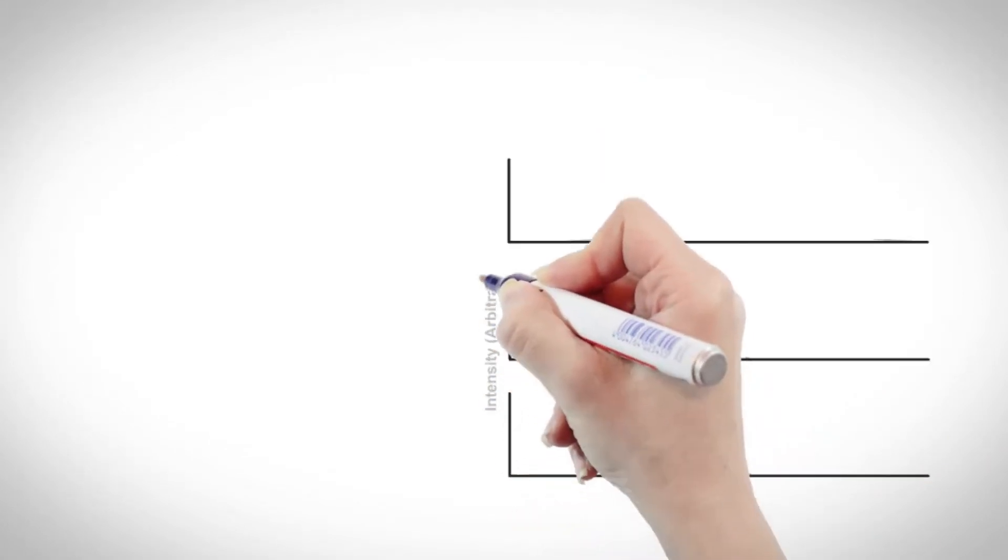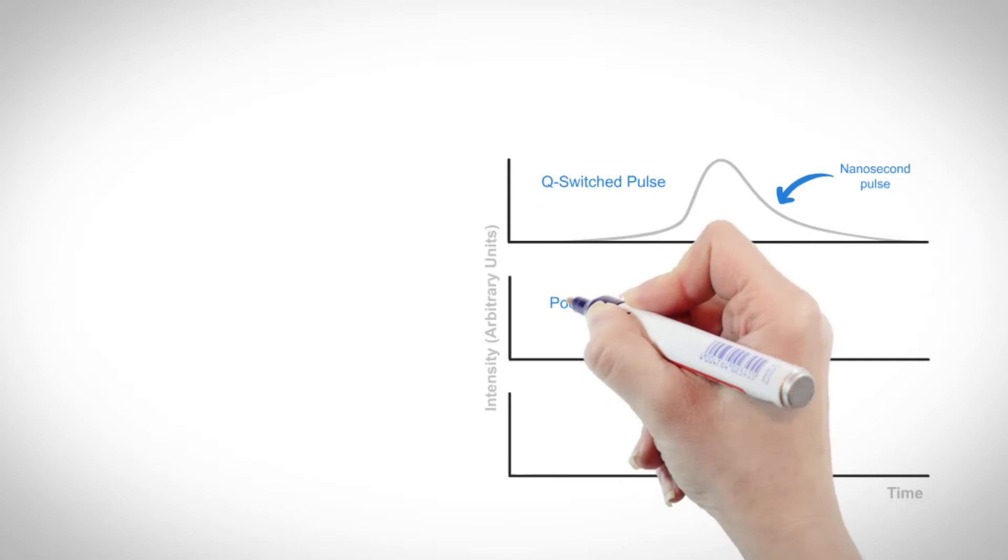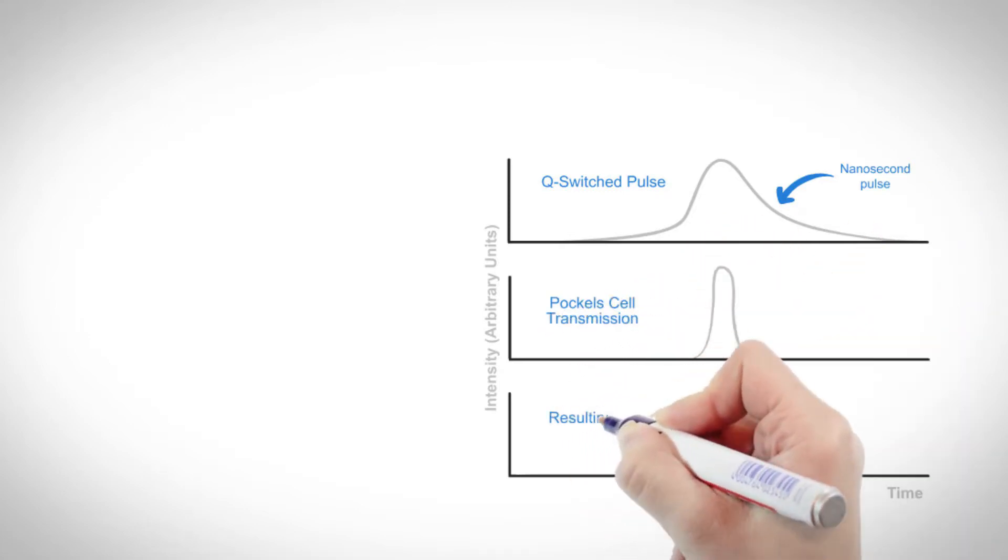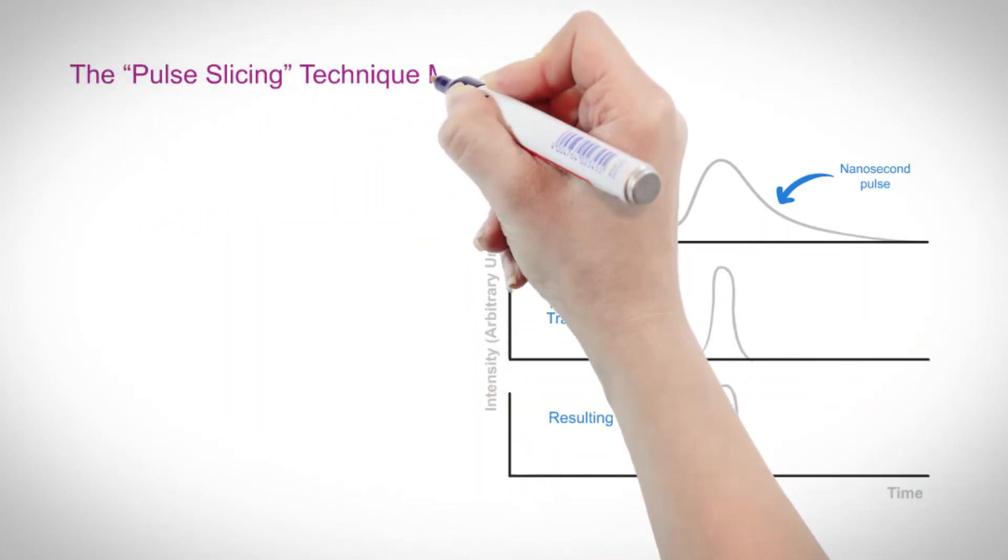But the peak power of a sliced pulse is the same as the Q-switched pulse from which it is derived, with no additional power benefit over the original nanosecond pulse.